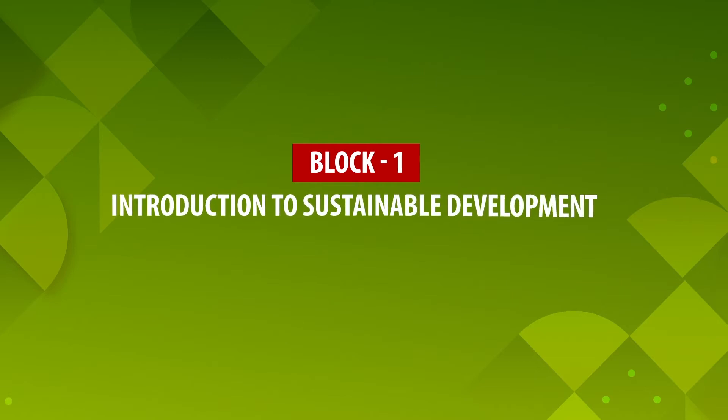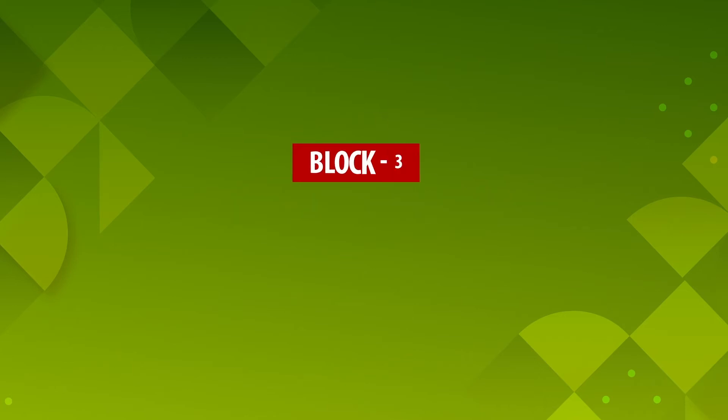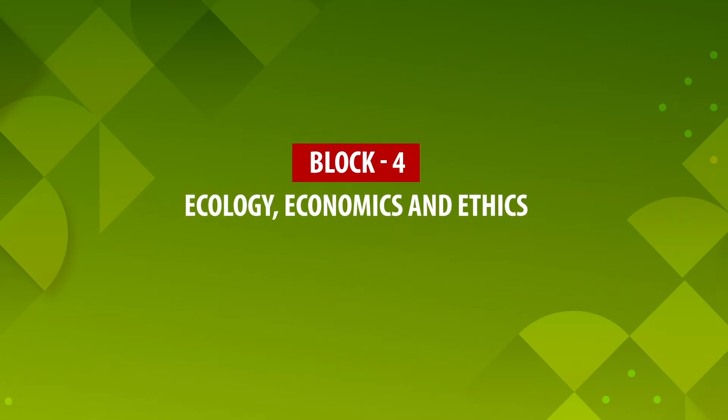Block one is an introduction to sustainable development. Block two will talk about the basics of sustainability science and its principles. Block three covers approaches to sustainable development. And block four is on ecology, economics, and ethics. The teaching and learning process is spread into twelve weeks. The major objective of block one — introduction to sustainable development — is to understand the concept and evolution of sustainable development, its definition, and the critiques. It is discussed in four units, and the teaching learning process will take two weeks.